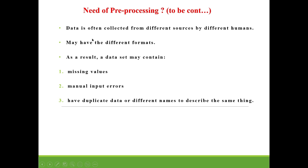Generally, data is collected from different sources by different people, which is why it is not always in proper format. Due to collection by different people, the dataset may contain missing values, manual input errors, duplicate or repeated data, and sometimes the same thing may be described by different names by different people.